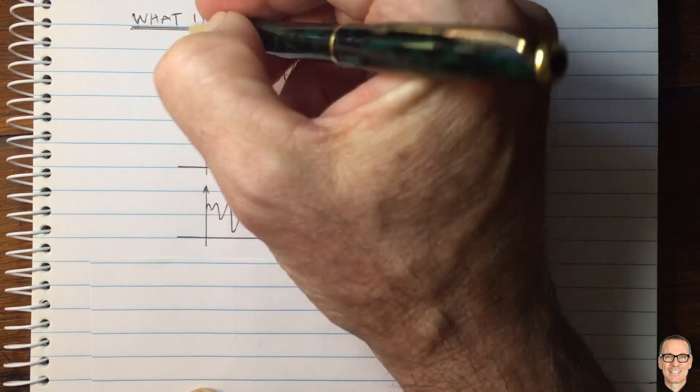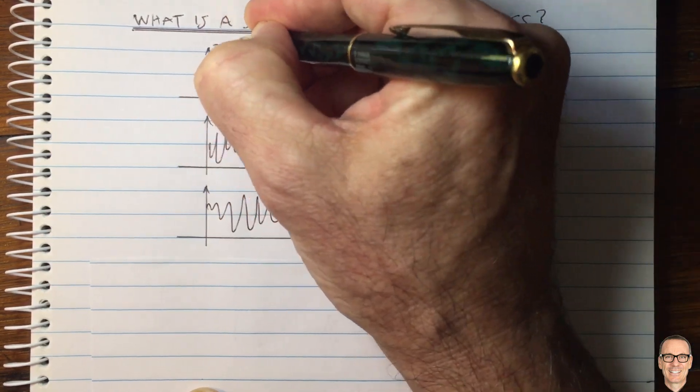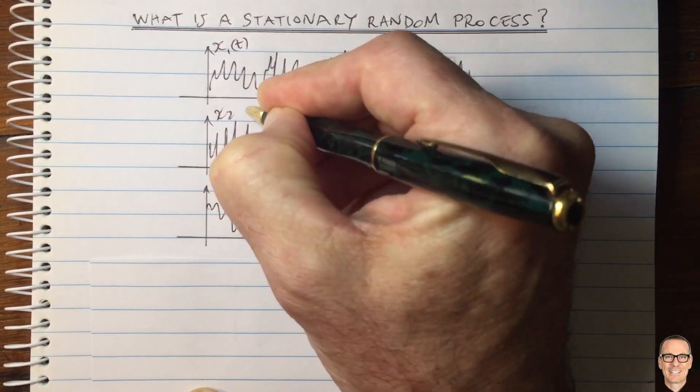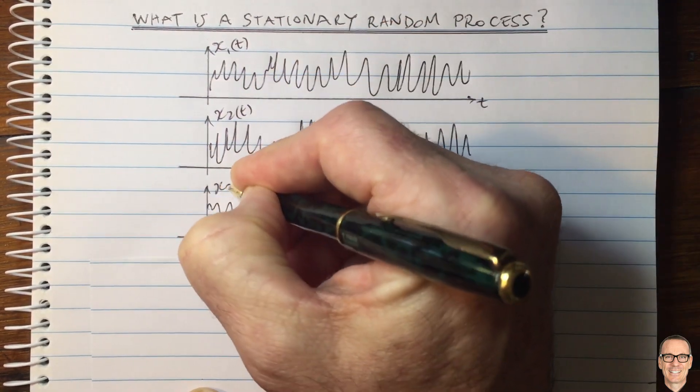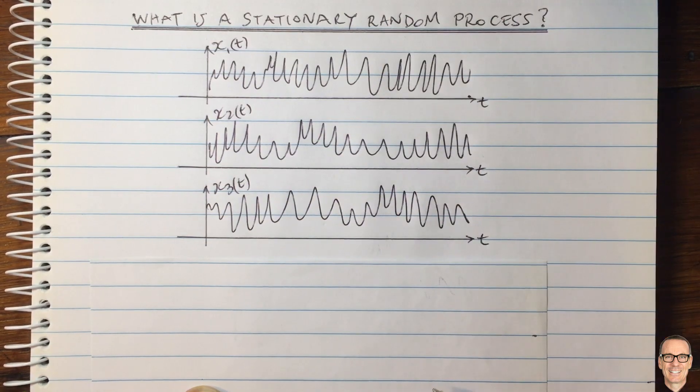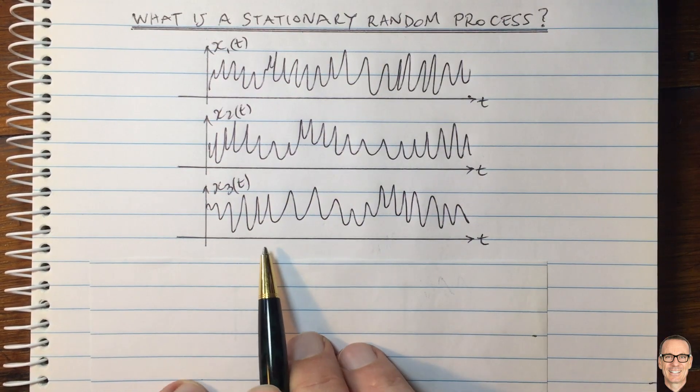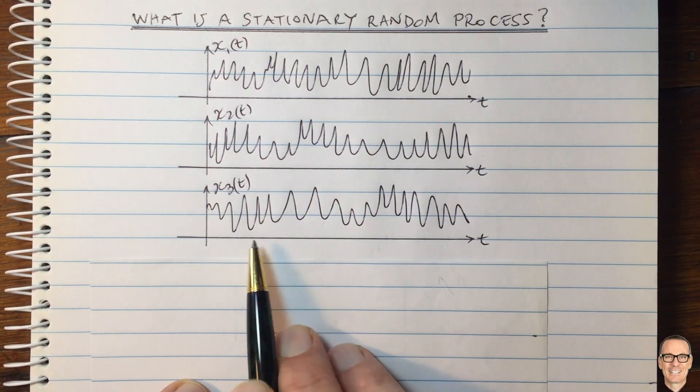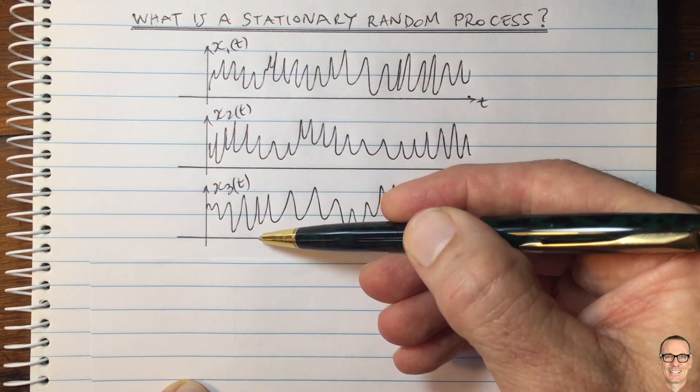And we're going to call this x1 of t, x2 of t, x3 of t, and so on. And of course, every other day, you'll get another one of these functions. So now let's think at any given time, the value of the function is random.